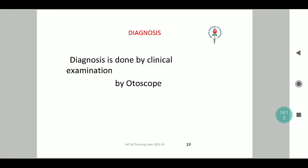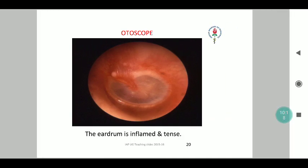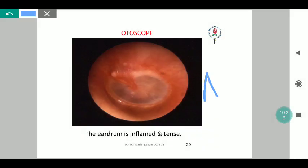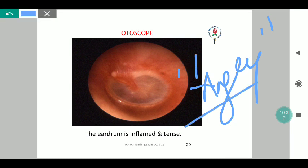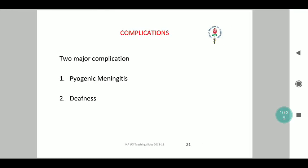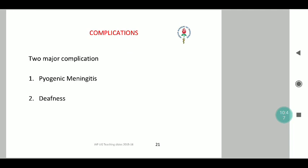Considering the etiology of otitis media, we classify it as bacterial and viral. Amidst bacterial causes, Streptococcus pneumoniae, H. influenzae and Moraxella catarrhalis are the most common organisms in that order. Viruses causing otitis media include respiratory syncytial virus and influenza virus. Very rare causes in immunocompromised patients include fungal organisms such as Candida, seen only in conditions like SCID or severely affected HIV children. Diagnosis of AOM is clinical, done by examination using an otoscope, revealing a reddish, inflamed, tense tympanic membrane — described as an angry looking tympanic membrane.